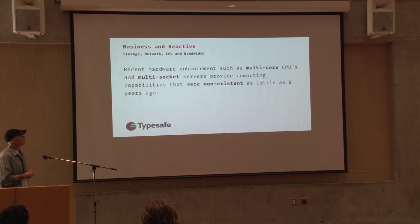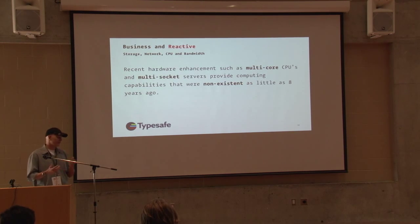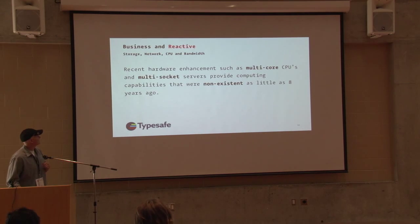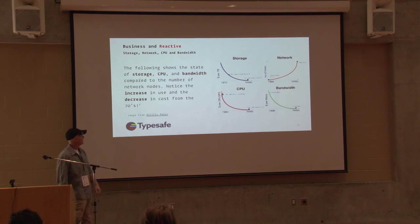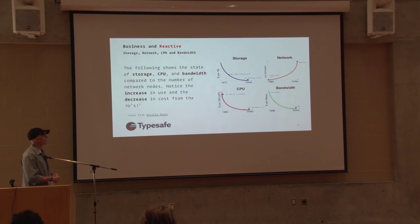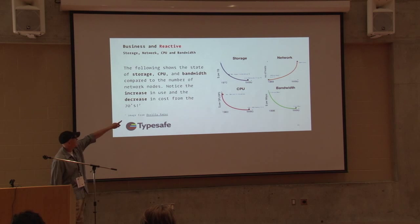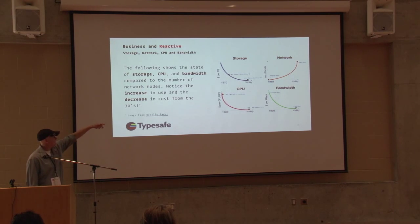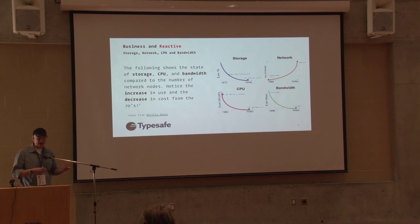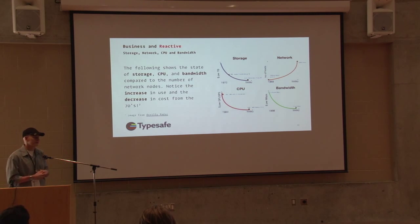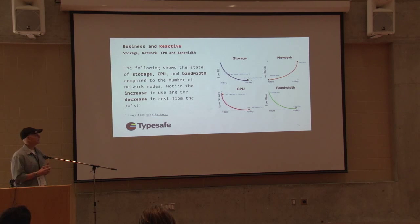We've had advances in cores and all these types of things that ten years ago didn't exist. Here's a graph that shows storage, network, CPU, and bandwidth and the costs associated with them over time. The cost of storage goes down, the use goes up. The same thing with CPU. Both costs go down, and bandwidth cost goes down. I used to pay three thousand dollars a month for two T1s. Now I pay 60 bucks a month for 75 megabits up and down. That's the advancement of technology.